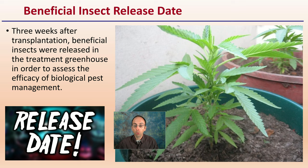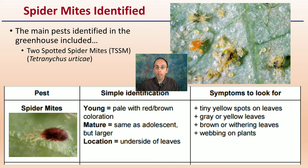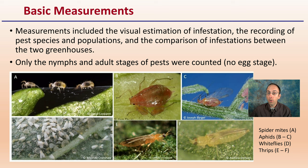This study specifically looked at spider mites — particularly the two-spotted spider mites, abbreviated as TSSM throughout the article and presentation. Basic measurements include visual estimations of the infestation, recording of pest species and populations, and comparison of infestations between the two greenhouses. Only the nymph and adult stages of the pests were counted — no egg stage. This shows what some of the insects look like in comparison.